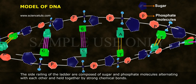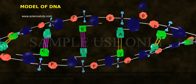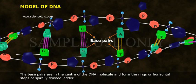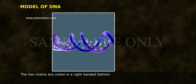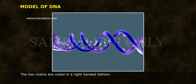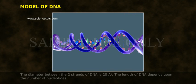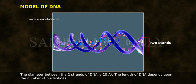The base pairs are in the center of the DNA molecule and form the rungs — the horizontal steps of the spirally twisted ladder. The two chains are coiled in a right-handed fashion. The diameter between the two strands of DNA is 20 angstroms. The length of DNA depends upon the number of nucleotides.